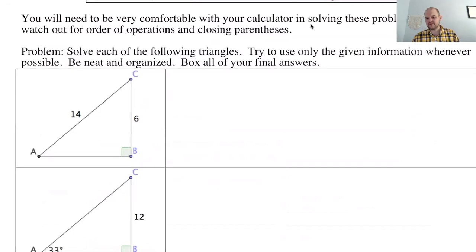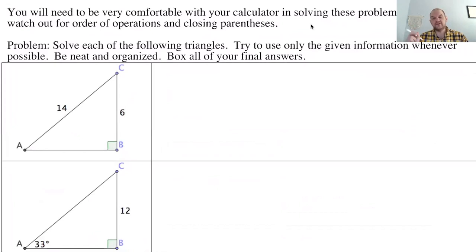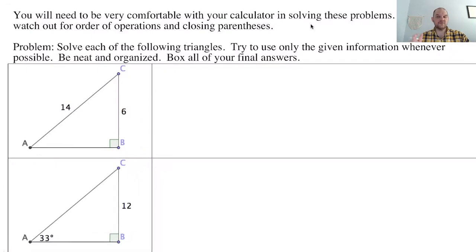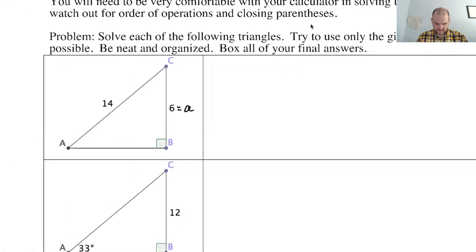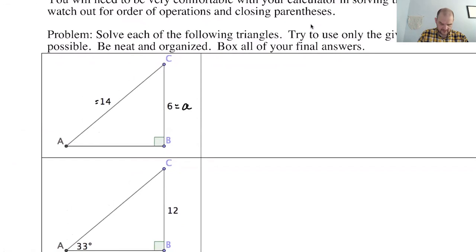This is hopefully review, so let's try it. We're going to write our answers exactly and then use a calculator to get approximations — two different things. The exact answer is as good as you'll ever get; the approximation is a decimal. By convention, the side opposite angle A is side lowercase a, the side opposite angle B is side lowercase b, and the side opposite angle C is side lowercase c.